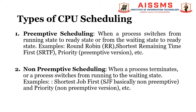Let's see the types of CPU scheduling. There are majorly two types: the first one is primitive scheduling and the second one is non-primitive scheduling. Let's see each one in detail.